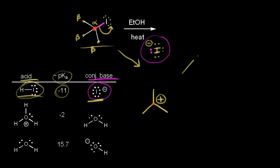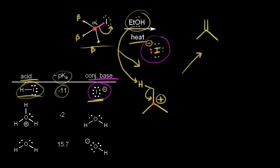The second step of an E1 elimination mechanism: the base comes along and takes a proton from a beta carbon. Our base in this case is ethanol. Ethanol is not a strong base, but it can take a proton. A lone pair of electrons on the oxygen takes this proton, and those electrons move in to form our alkene. The electrons in blue moved in to form our double bond and we form our product.